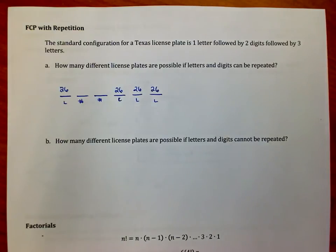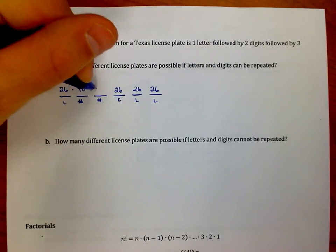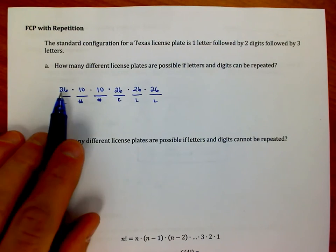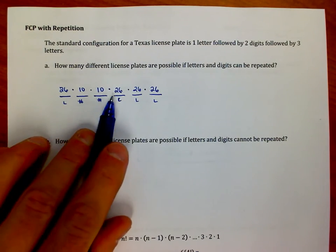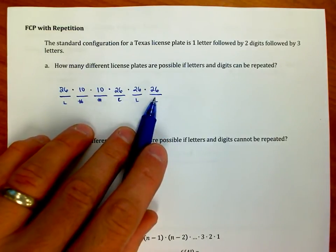As far as numbers go, there are 10 digits to choose from: zero, one through nine. So there are 10 numbers that I could choose for these two spots. All I'm going to do for the fundamental counting principle is say I have 26 choices here, 10, 10, 26, 26, 26. I'm going to multiply those all together and that's going to give me a pretty big number here.